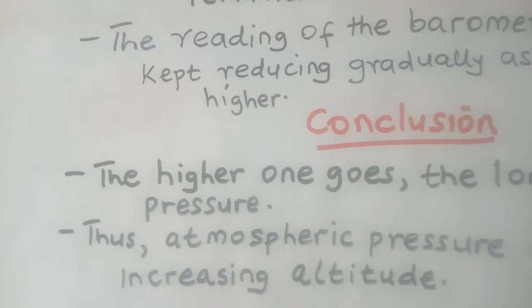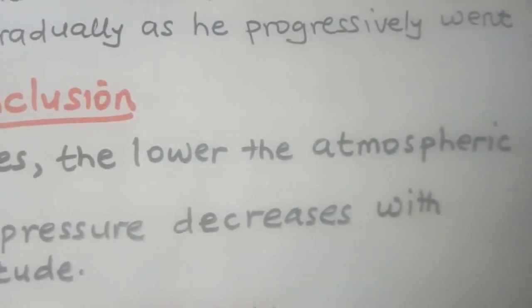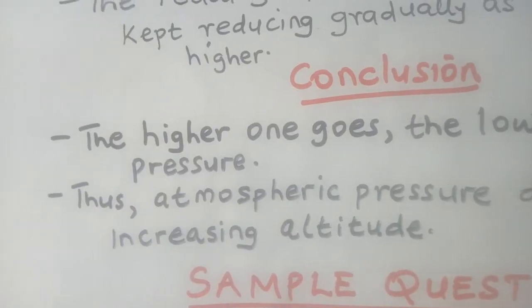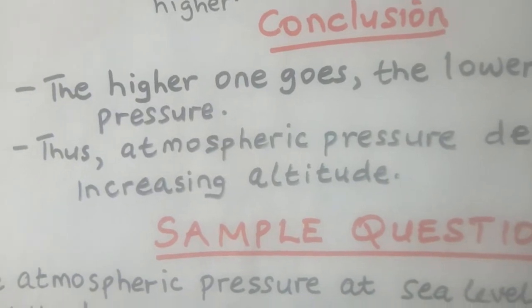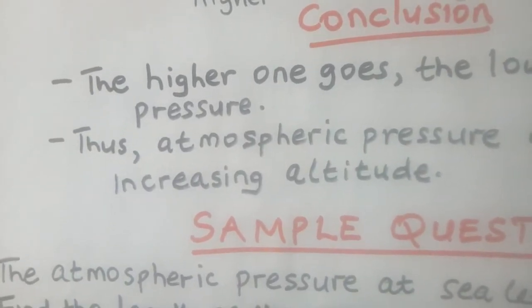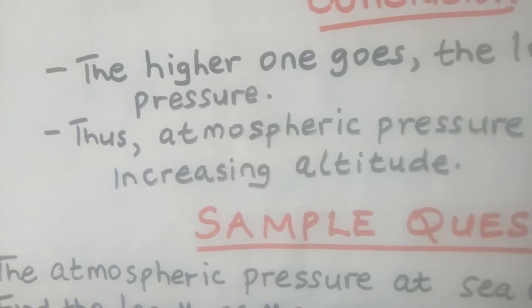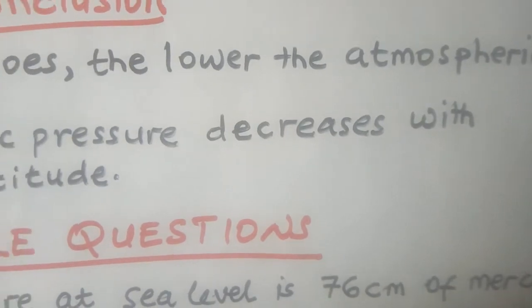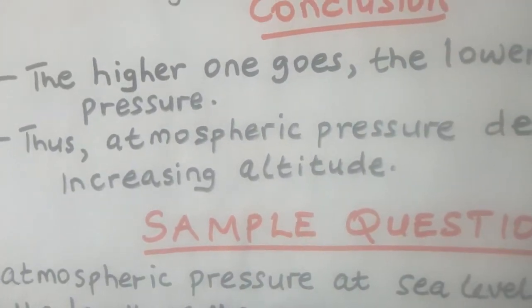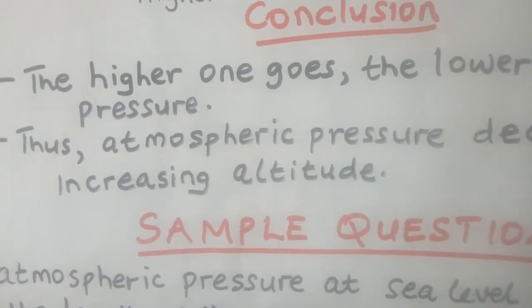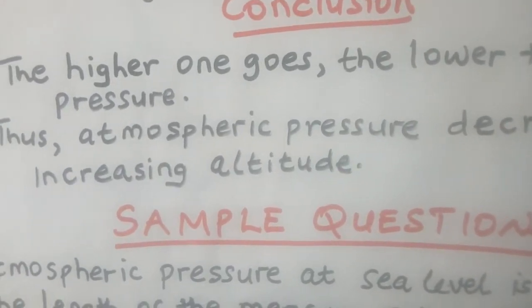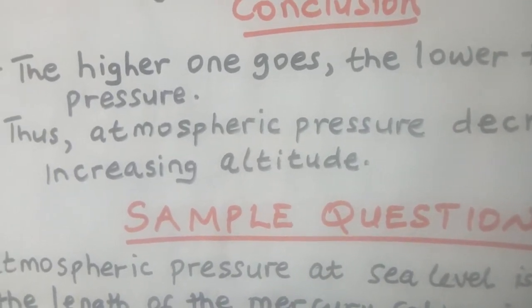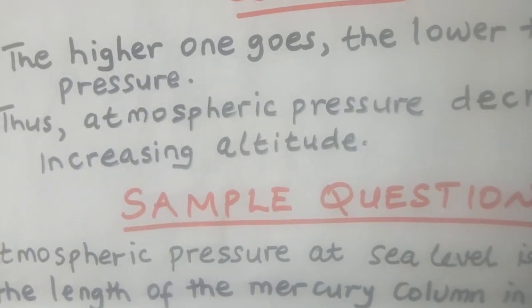So he was able to conclude that the higher you go, the lower the atmospheric pressure. As you move higher, the altitude is increasing. We can conclude by saying that atmospheric pressure decreases with increasing altitude. That is why at the top of the mountain, the atmospheric pressure is lower than at the bottom.